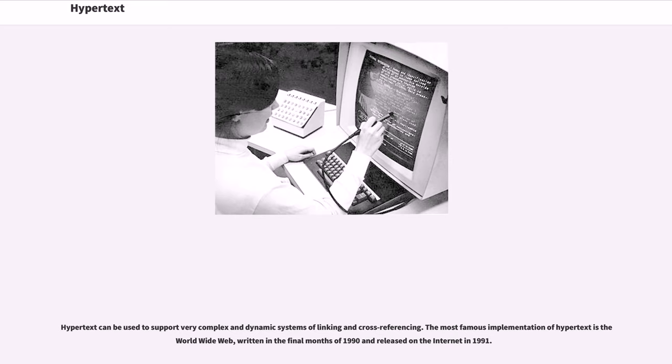Hypertext can be used to support very complex and dynamic systems of linking and cross-referencing. The most famous implementation of hypertext is the World Wide Web, written in the final months of 1990 and released on the Internet in 1991.